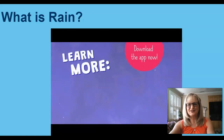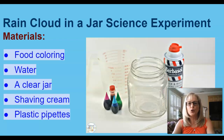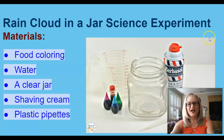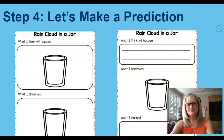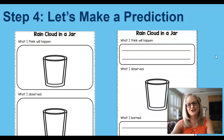Let's have a discussion about what we've learned. Now we are ready to explore our hypothesis with an experiment. We are going to be making a rain cloud in a jar. We will be using the following materials: food coloring, water, a clear jar, some shaving cream, and plastic pipettes, which are optional. Before we begin the experiment, there is another very important step. Scientists always make a prediction. Use the worksheet provided to draw a picture and write what you think will happen in the experiment.